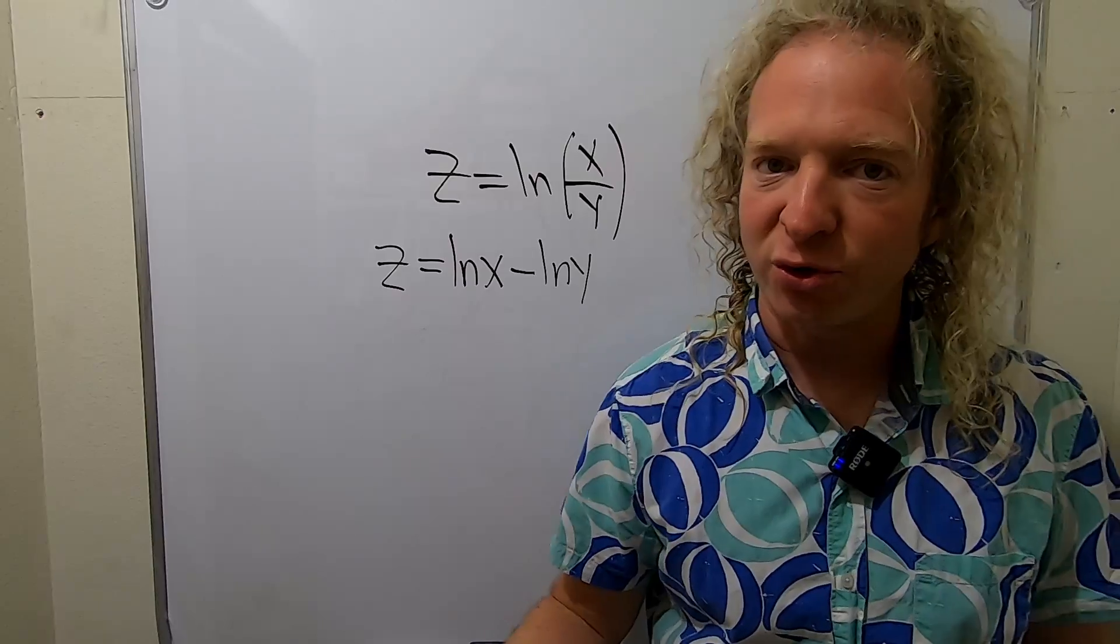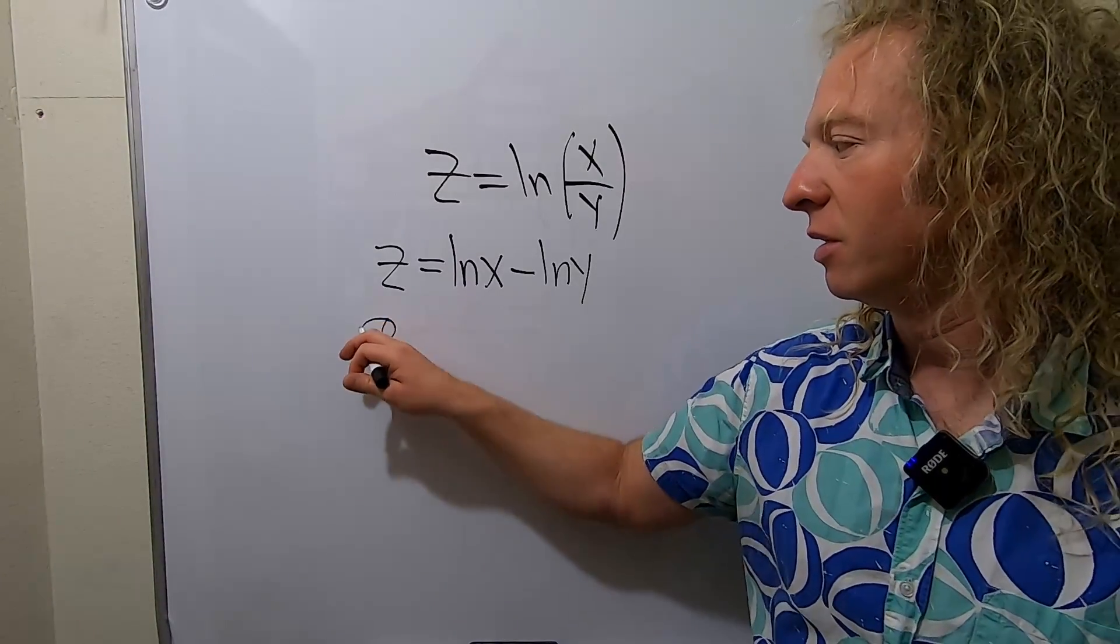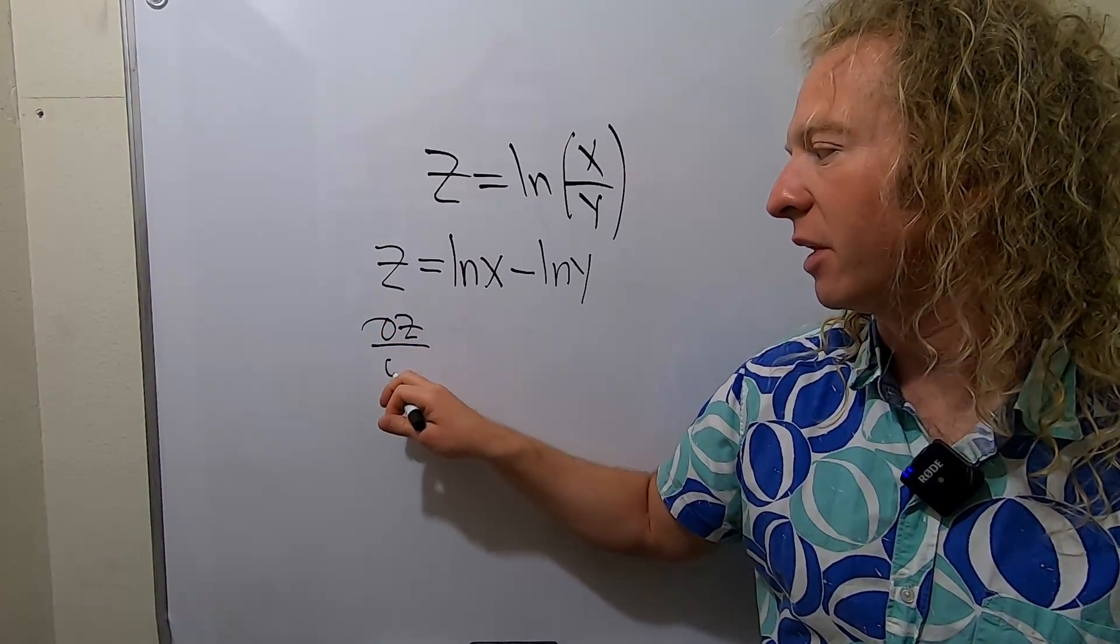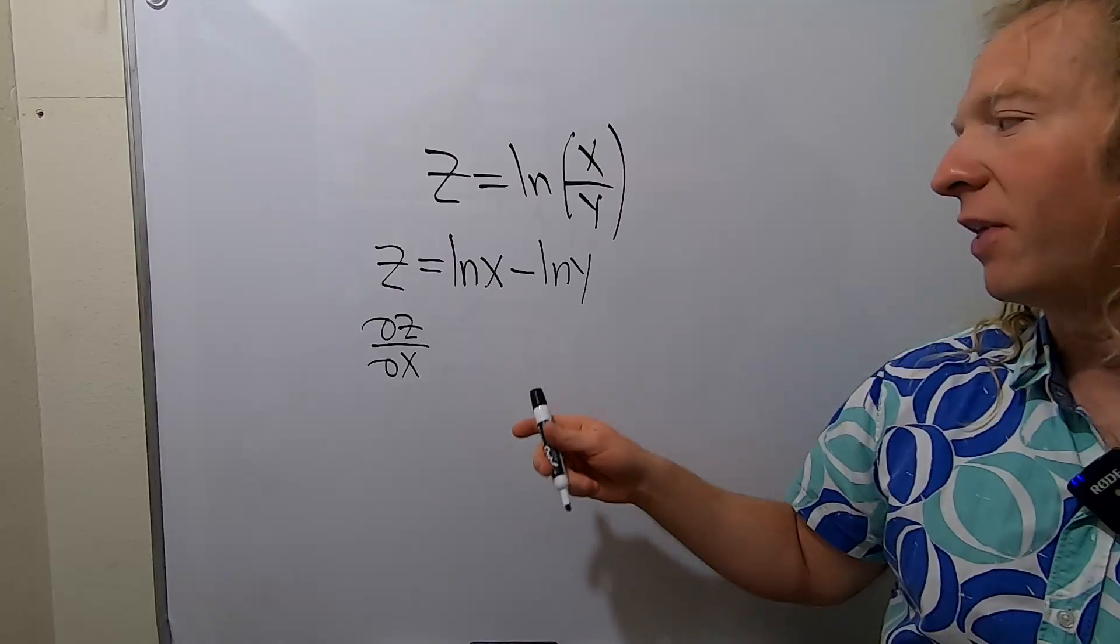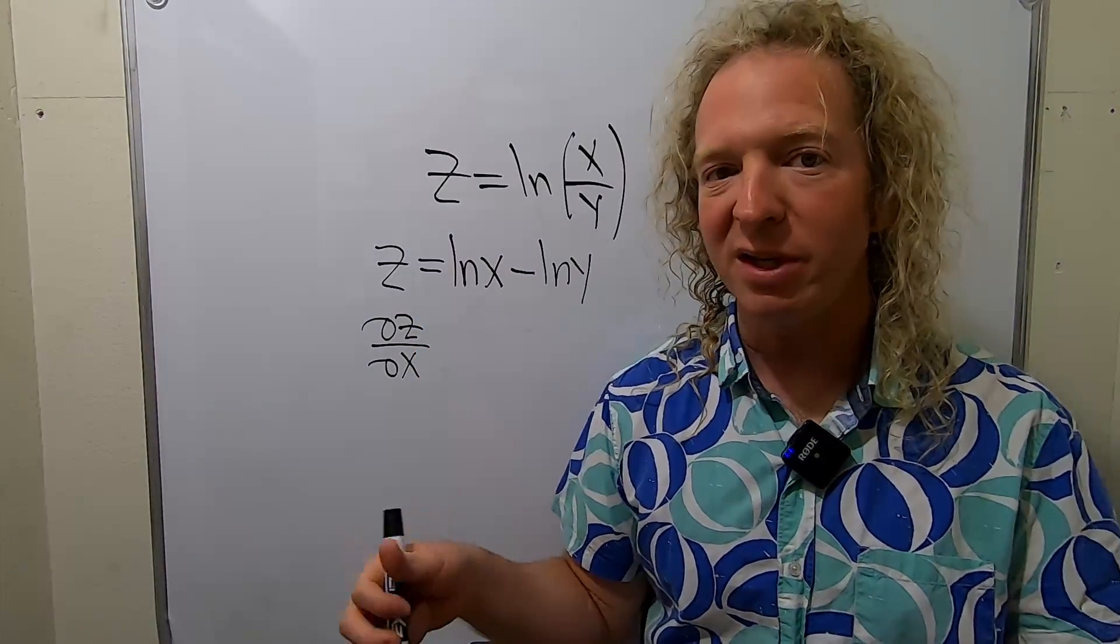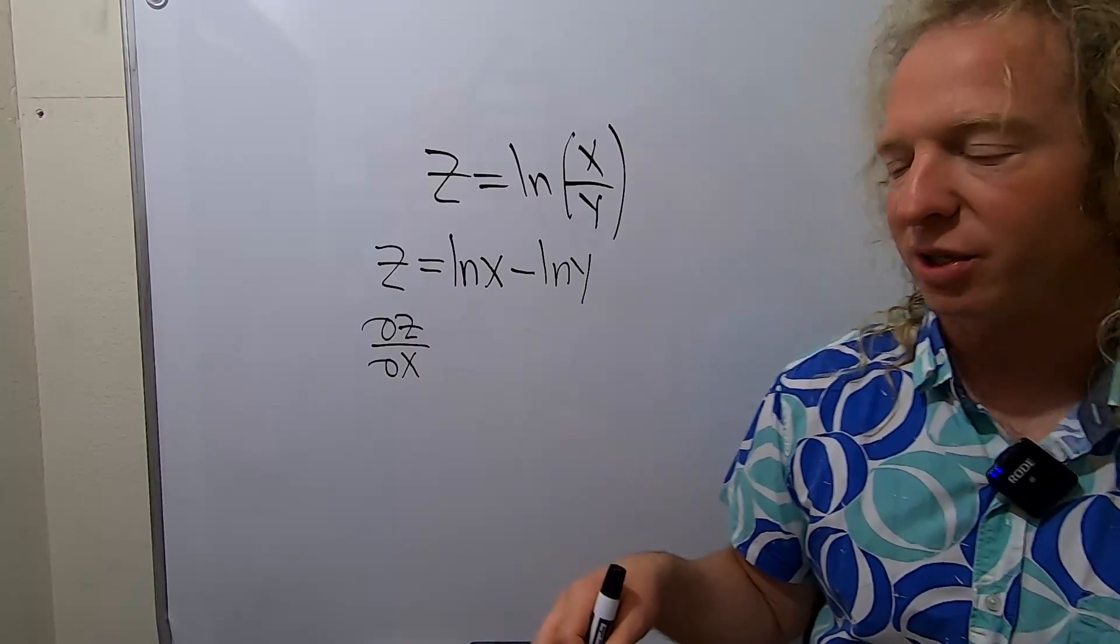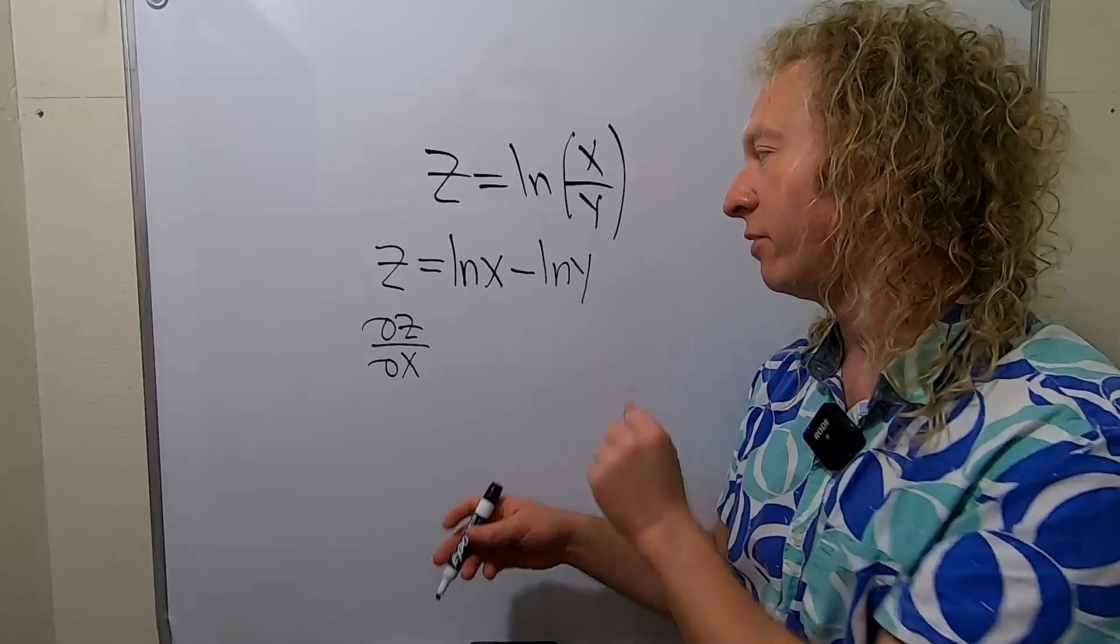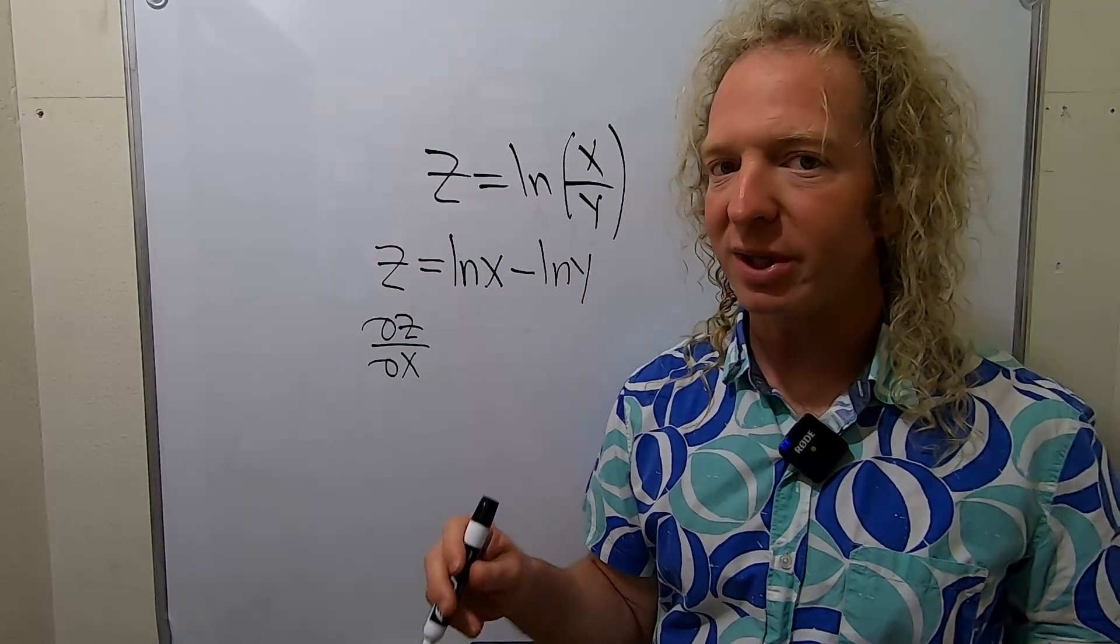Now we're going to compute the partial derivatives. Let's compute ∂z/∂x first. Recall that ∂z/∂x intuitively is the slope in the x direction. When we compute this derivative, we treat all the other variables as constants.